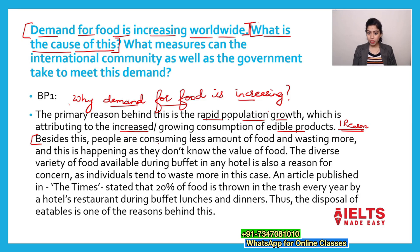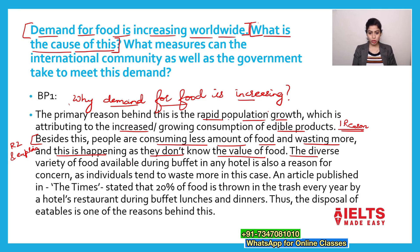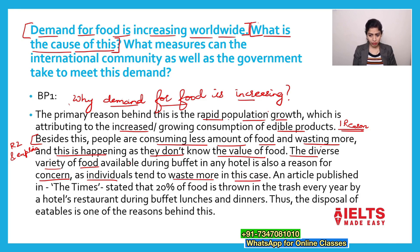Besides this, people are consuming less amount of food and wasting more, and this is happening as they don't know the value of food. That is reason 2 and its explanation. Now elaborate: the diverse variety of food available during buffet in any hotel is also a reason of concern. Because of the diverse variety, we tend to eat more and even waste more, as individuals tend to waste more in this case. Elaborate means you are just answering why and how.